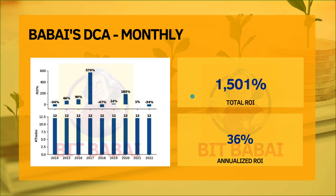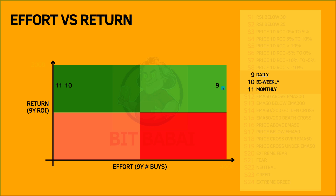Strategy number three is monthly. Again, you see the same pattern — similar ROI, similar annualized ROI, and similar ROI per year following the wave structures. The difference is now you only have 12 buys per year instead of 24 for bi-weekly, since you buy just once a month. On the effort versus return chart, monthly is even better than bi-weekly — it returns the same ROI but with even less effort.